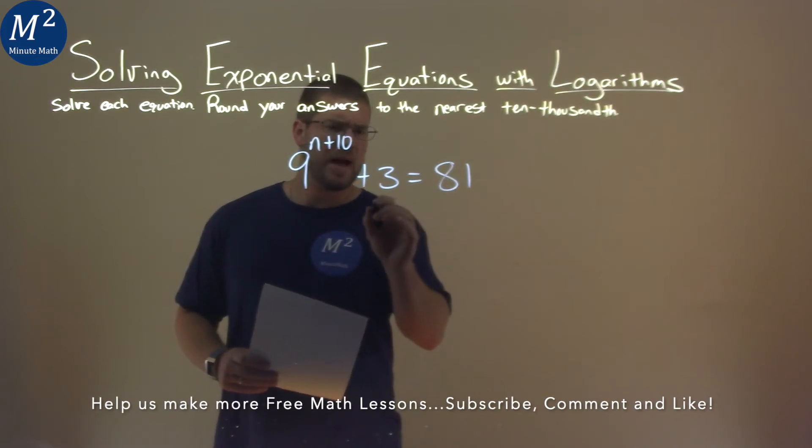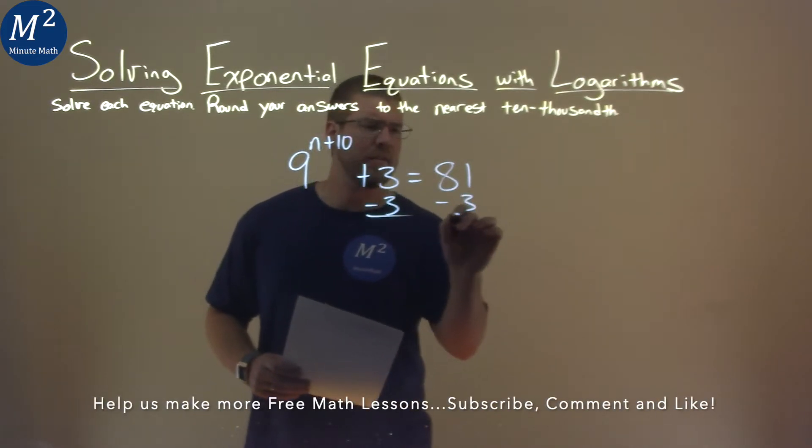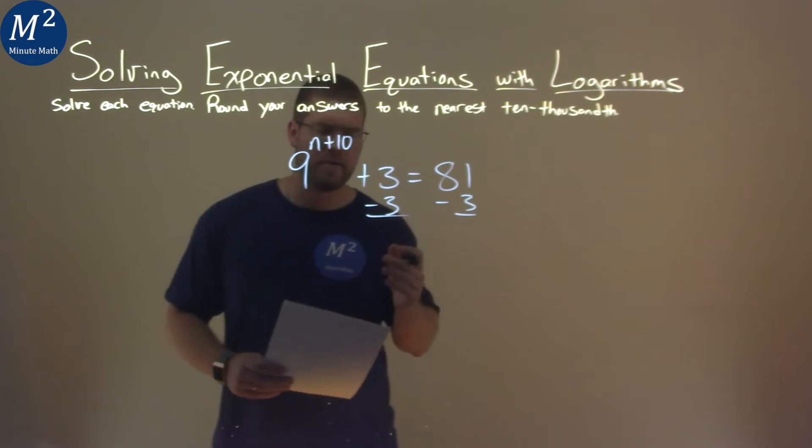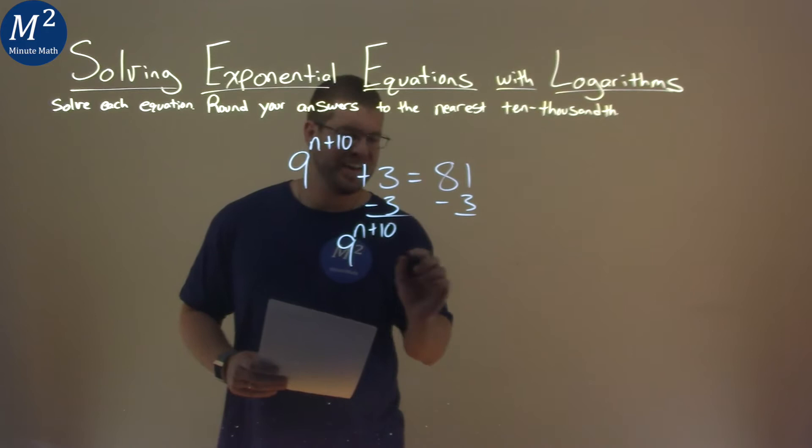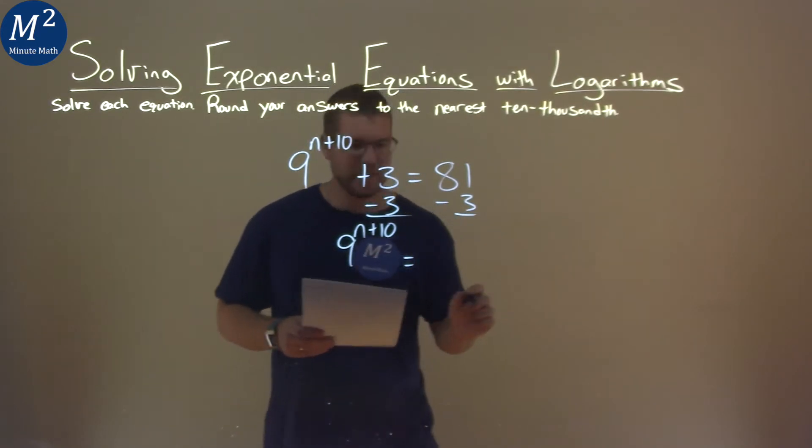Well, first thing I want to do is subtract 3 from both sides. Let's get this 9 to the power by itself. In doing so, I have 9 to the n plus 10 power is equal to 78.